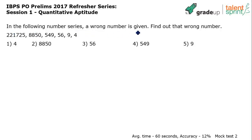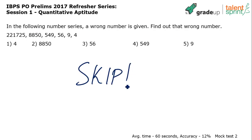In the following number series, a wrong number is given — find out that wrong number. Skip — that's my solution. I'm not saying this is a solution all of you have to follow; you may wish to spend 30 seconds, but I would not even do that. Being choosy is important when you go for these exams. Skip.